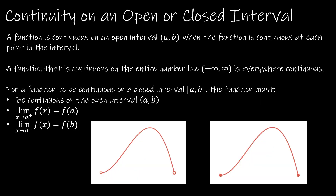Now that we know continuity at a point, we want to look at continuity on an open or closed interval. A function is continuous on an open interval (a, b) when the function is continuous at each point on the interval. At any of these points, the limit from the left, the limit from the right, and the function itself all equal one another. For an open interval, we don't care about the endpoints — we only care about what's in the middle.